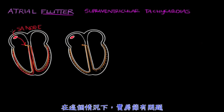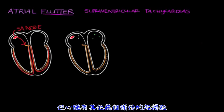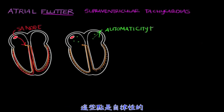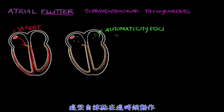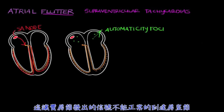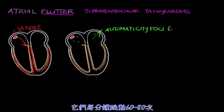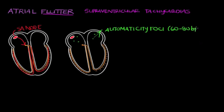In case the SA node fails, the heart has several backup pacemakers called automaticity foci. These backup pacers only fire in the event that the signal from the SA node is not efficiently or effectively reaching the AV node. And when they do fire, they fire at a rate between 60 and 80 beats per minute, or BPM.